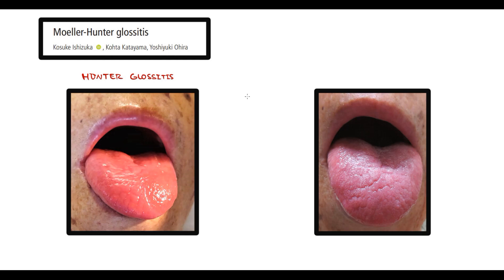Let's explain the pathogenesis of Hunter glossitis. Here we have a layer of tongue muscle tissue. On top we have submucosa with blood vessels, and the most superficial layer is composed of a few layers of epithelial cells.